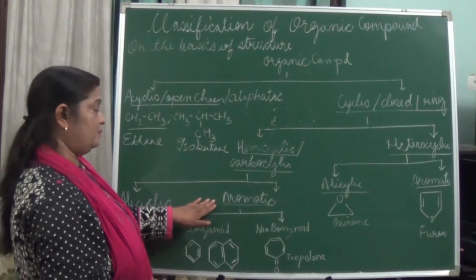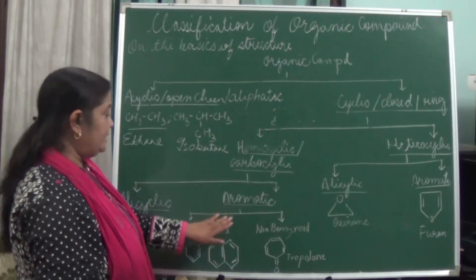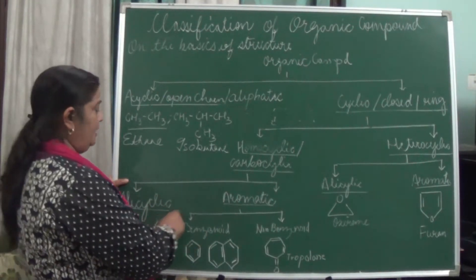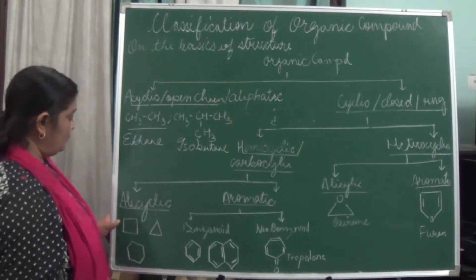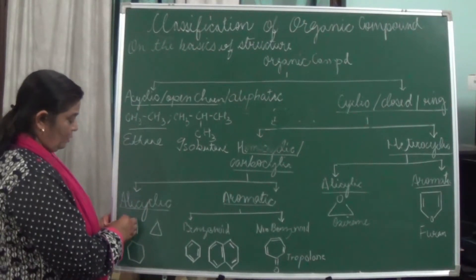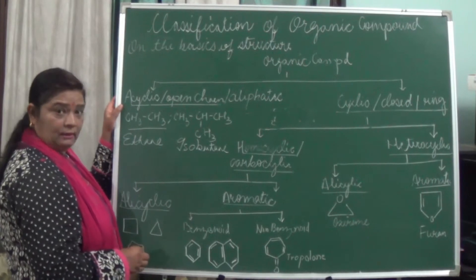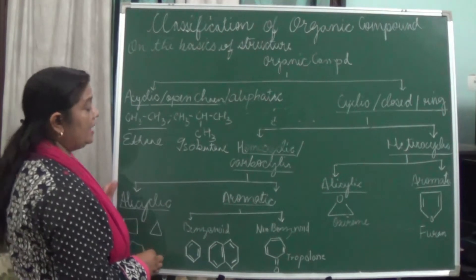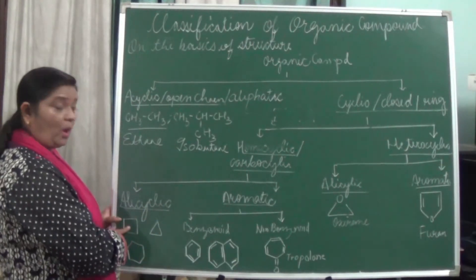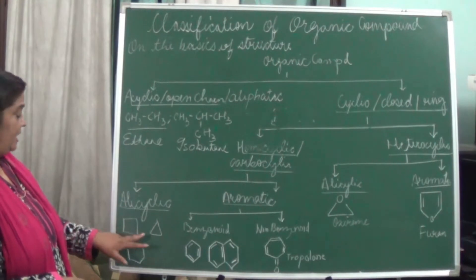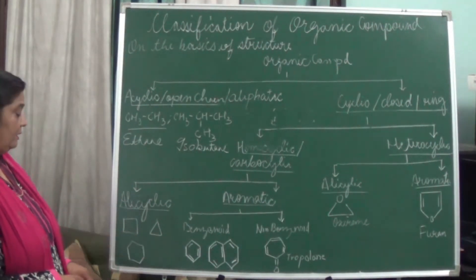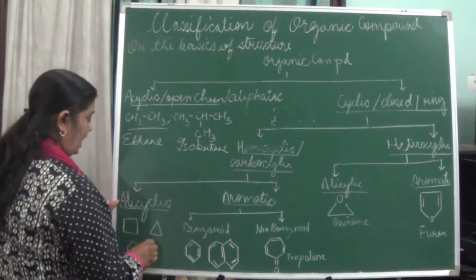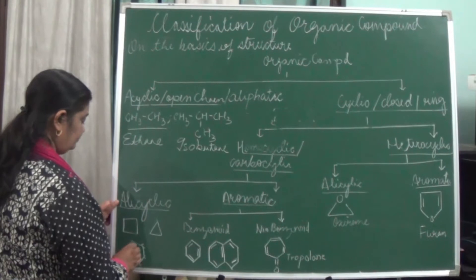In homocyclic compounds, they are classified into alicyclic and aromatic. Alicyclic compounds are like aliphatic only — the thing is that they are closed in nature. Examples are cyclobutane, cyclopropane, and cyclohexane. Here you will see carbon everywhere throughout the ring.